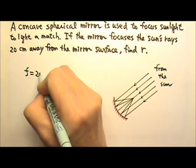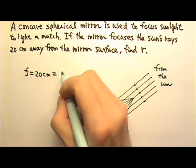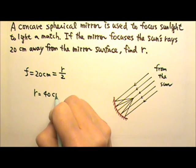So the focal length is 20 centimeters and the focal length of a concave spherical mirror is half the radius. Therefore the radius must be 40 centimeters.